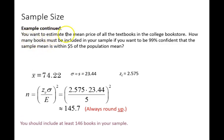Here we want to estimate the mean price of all textbooks in a college bookstore. How many books must be included in your sample if you want to be 99% confident that the mean will be within $5 of the population mean? In this example, we're rearranging the previous formula to solve for n rather than E. In this case, we already have E as $5.